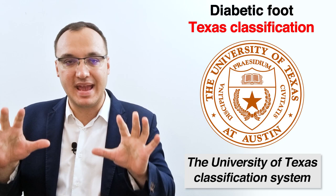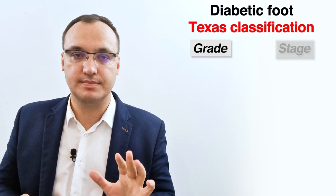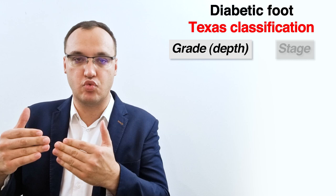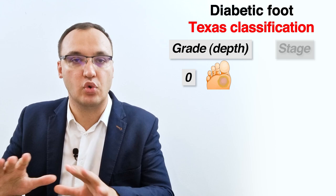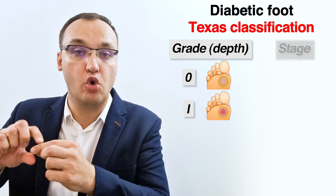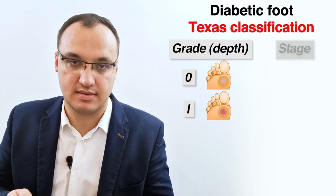The two main things you need to remember when you classify something are grade and stage. If we look at grade, we are only dealing with the depth of the wound. If you see that it is only in the superficial skin, then you know it is grade zero — there is only superficial damage. If it is involving the whole skin, meaning the epidermis, the dermis, and the subcutaneous tissue, then we are dealing with grade one.